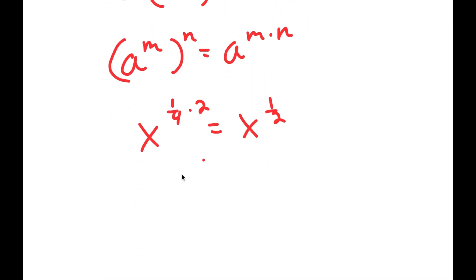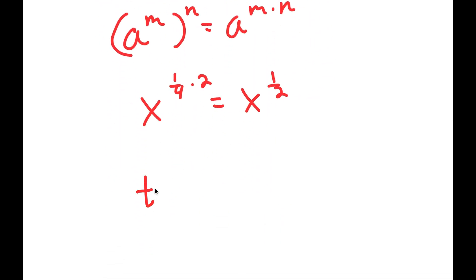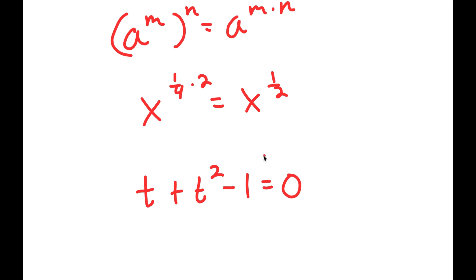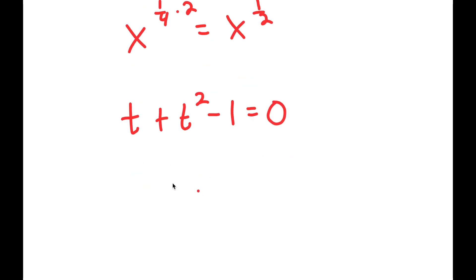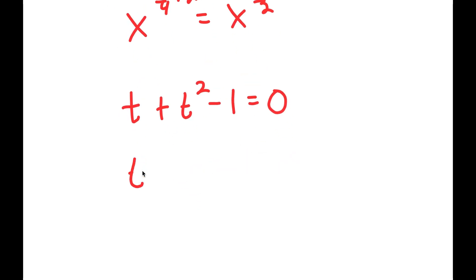So I have t plus t squared minus 1 is equal to 0. Rearranging, I get t squared plus t minus 1 is equal to 0.